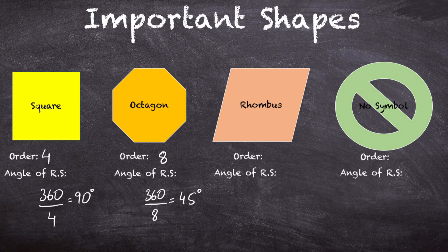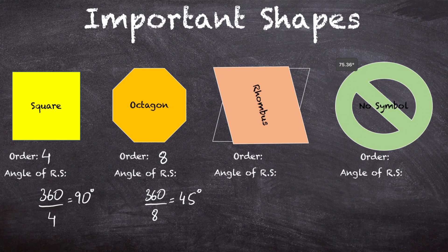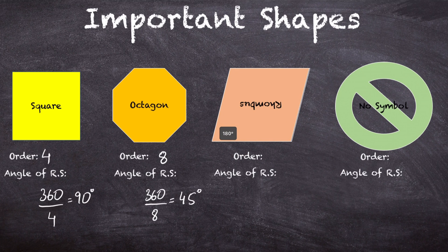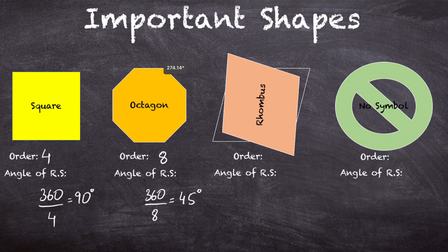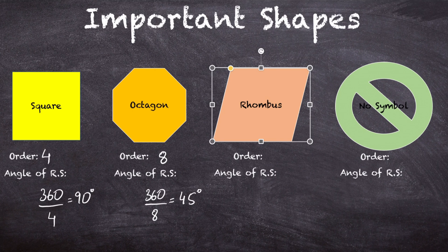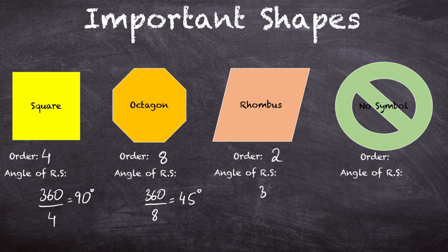Now let's look at this rhombus. As we start rotating it, we don't get the exact same shape right away. Once we rotate it 180 degrees, we get the same shape, and then again at a full 360 degree turn. So the order of rotational symmetry is 2, and the angle is 360 divided by 2, which equals 180 degrees.